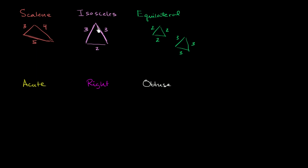Now you might ask: didn't you just say that an isosceles triangle has at least two sides being equal? Wouldn't an equilateral triangle be a special case of an isosceles triangle? And yes, you are absolutely right. An equilateral triangle has all three sides equal, so it meets the constraints for isosceles. By that definition, all equilateral triangles are also isosceles triangles, but not all isosceles triangles are equilateral. This isosceles triangle with sides 3, 3, and 2 is clearly not equilateral — only two sides are the same. But both equilateral triangles meet the constraint that at least two of the sides are equal.